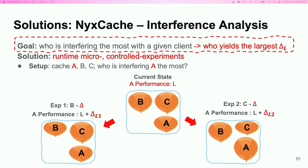Now, to answer who is generating more interference to A — B or C — it is straightforward. We just need to compare delta L1 and delta L2. The larger change indicates larger interference before the throttle.